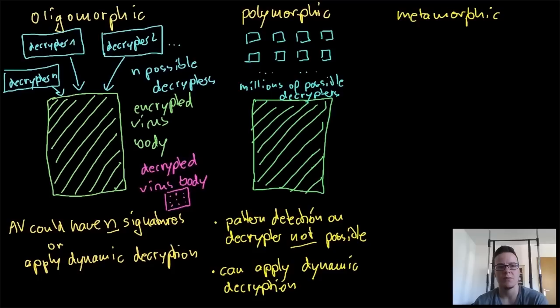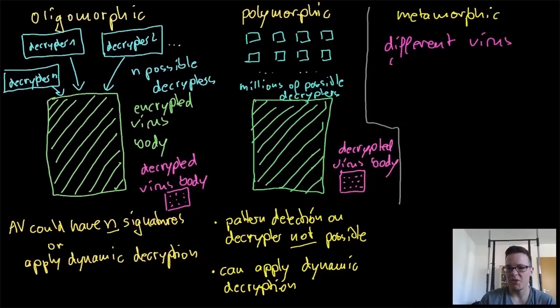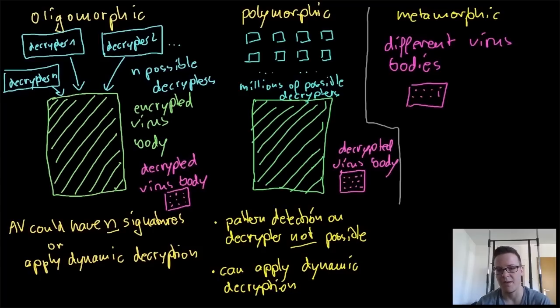In any case, with oligomorphic or polymorphic viruses, the decrypted virus body just looks the same. This is visualized by a rectangle with some dots in it, so it's always the same decrypted virus body. The metamorphic virus changes its own body shape all the time, so every time it creates a new generation...